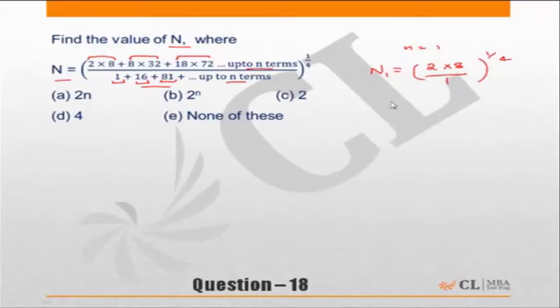If I take n equal to 2, that means the value of N up to the first two terms will be nothing but 2 into 8 plus 8 into 32, and similarly in the denominator we'll take two terms: 1 plus 16, and so on and so forth if you are going to n terms.